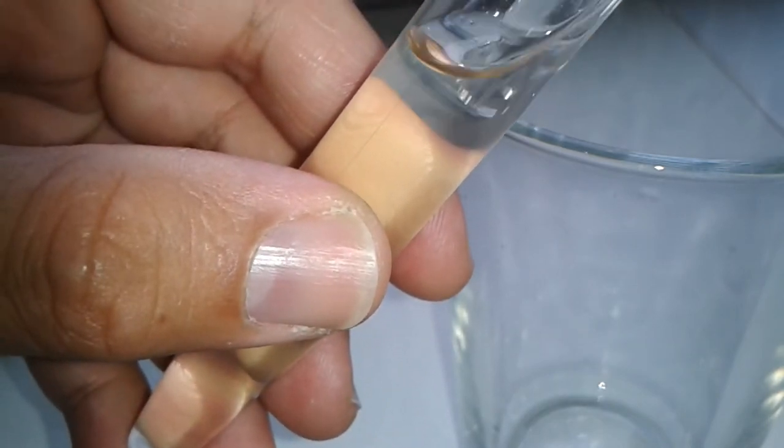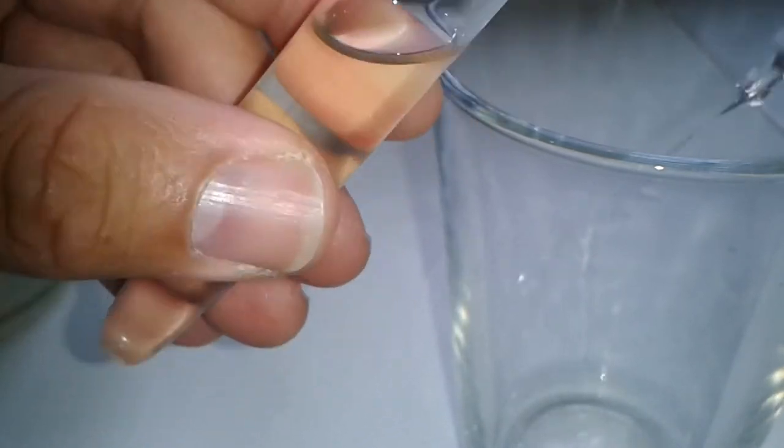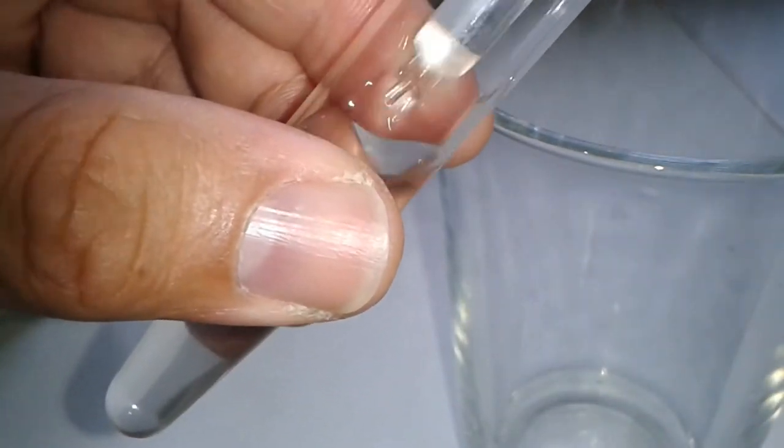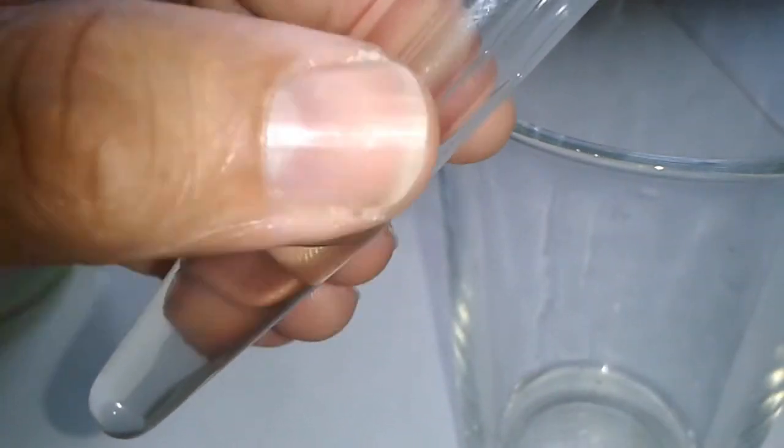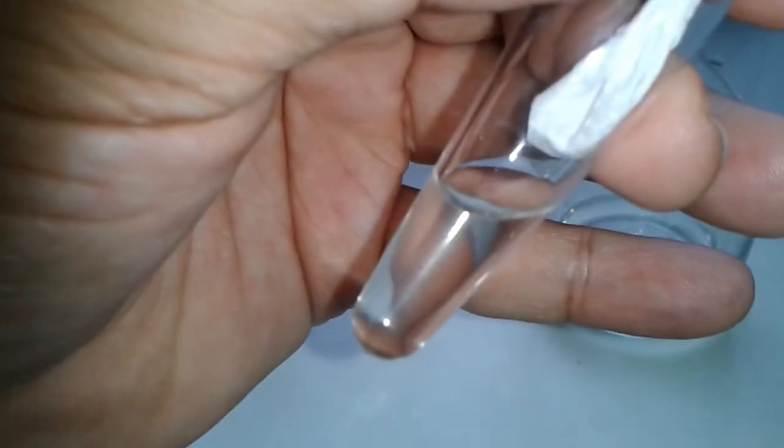And I'm carefully now removing the so-called supernatant, so basically the liquid at the top. And I'm using this with a pipette. And this way, I'm not disturbing the pollen which has collected on the very bottom of the tube.